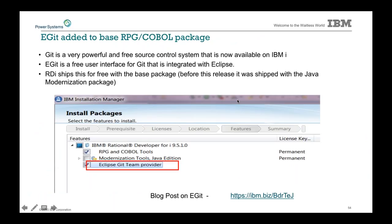We've also added the eGit plugin to RDI, so you can connect RDI very easily with a Git repository. We're definitely moving down this path — being able to open up both RPG and IBM i to deal with modern source control and modern tooling. Git is a very normal, modern place to do source control management for many open source projects. Now you have that available as a plugin to RDI where you can have a Git repository out in GitHub and connect to it from there.